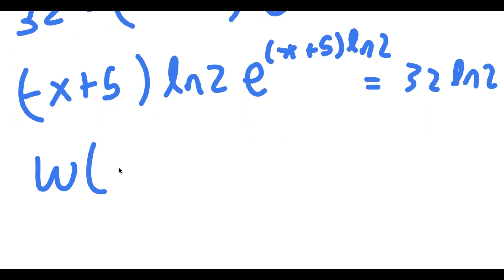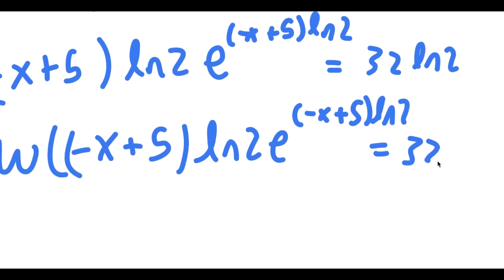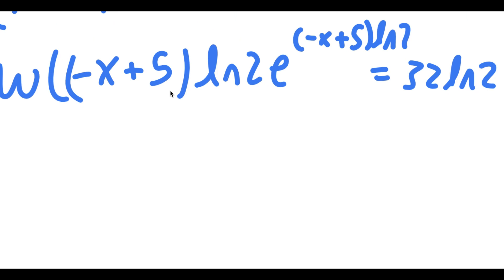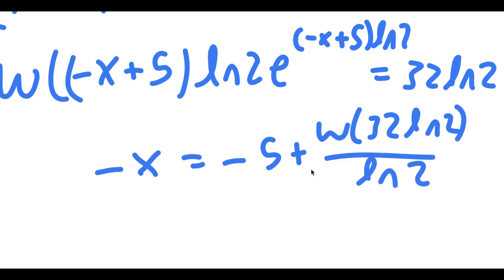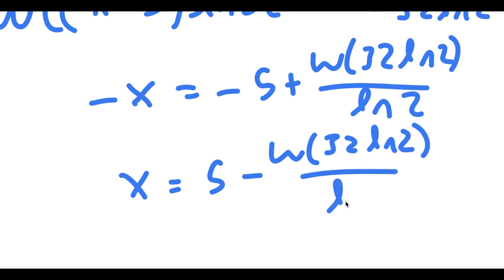Now if I take the Lambert W function on both sides — and if you don't know what this is, I highly recommend researching it — I'm left with negative x is equal to negative 5 plus W of 32 ln 2, all over ln of 2. So x is equal to 5 minus W of 32 ln 2 over ln of 2.